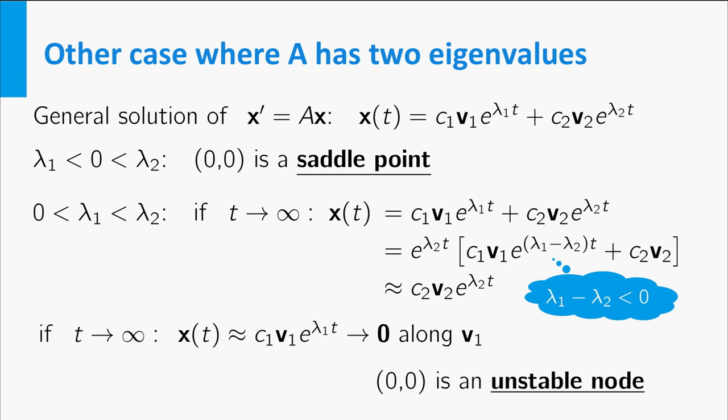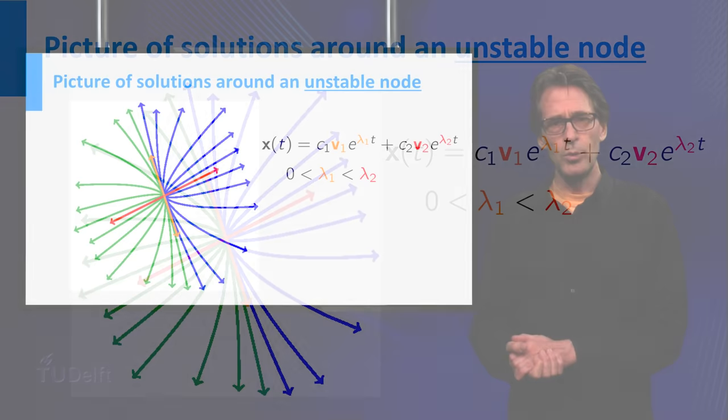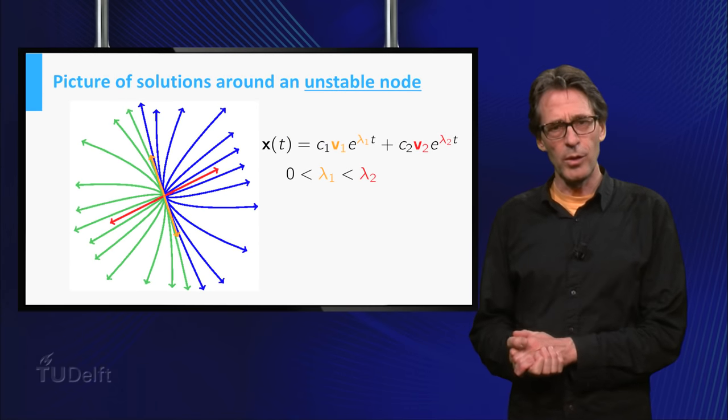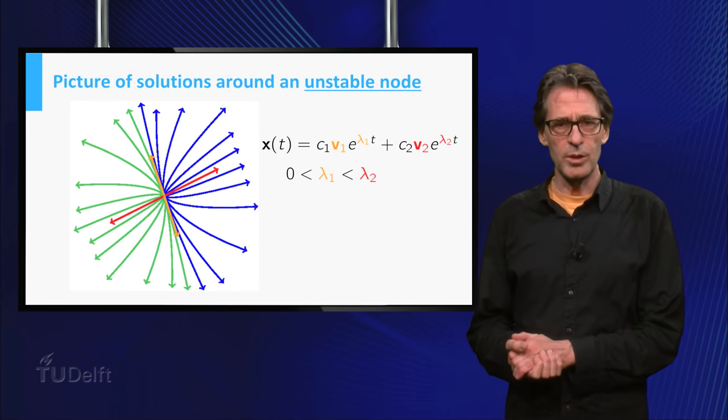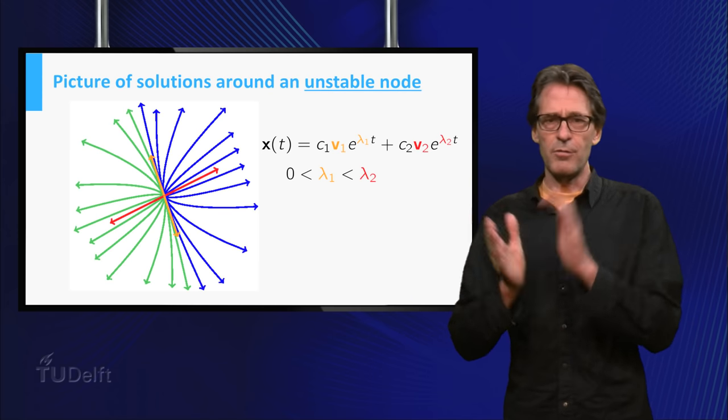In this case, the origin is called an unstable node, or a repeller. It repels solutions. We now get a picture like this. From the origin, solutions leave in the direction of the orange eigenvector belonging to the smallest eigenvalue and turn away in the direction of the red eigenvector.